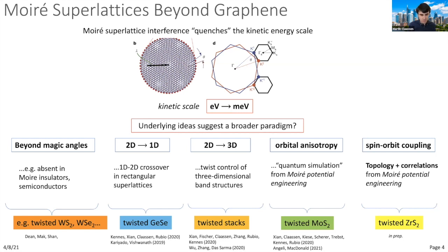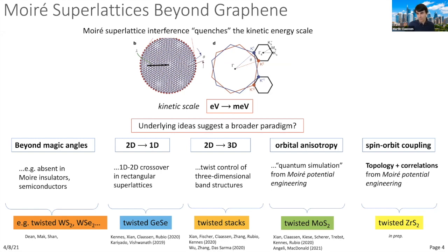This has been extended by various groups, with significant experimental effort on 2H transition metal dichalcogenide multilayers at a twist—for instance twisted tungsten diselenide or tungsten disulfide. Starting from a semiconducting monolayer and building a Lego construction by layering at a twist, while there are no magic angles unlike graphene, one finds a twist-angle-reduced kinetic energy scale leading to quasi-flat moiré bands at the top of the valence band, realizing correlated insulating states upon gating.